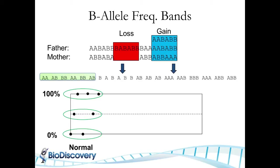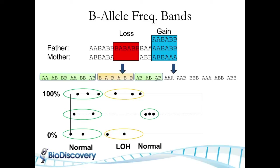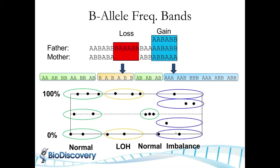If there is a loss — say the maternal copy is lost — you only get A's or B's, so the BAF collapses to either 0% or 100%. When there is a gain, such as a trisomy where the father's allele is duplicated, there's an imbalance between alleles. You no longer see the 50% band; instead you get bands at one-third and two-thirds B allele frequency, resulting in four bands.